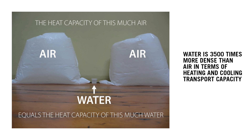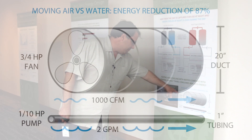With the chilled beam, there's a certain amount of primary air that comes out — that's your outside air — but it induces more air through a coil that can heat and cool the room, so you're separating ventilation loads from your internal loads, which is a big advantage.